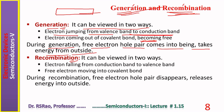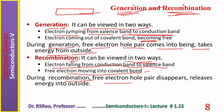Recombination can also be viewed in two ways: as an electron falling from the conduction band into the valence band, or as a free electron moving back into a covalent bond. During recombination, a free electron-hole pair disappears and releases energy into the outside world.